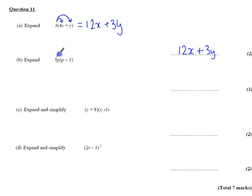Do the same thing for the second one, except our first multiplication is 5p times p, which gets us 5p squared, and our second one gives us 5p times minus 3, which is minus 15p. So 5p squared minus 15p.